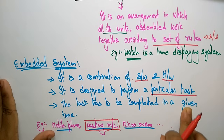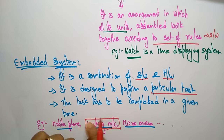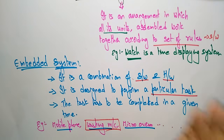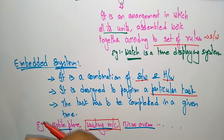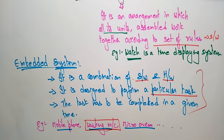The embedded system is designed to perform only a particular task. A washing machine performs only one task — washing clothes — and that task requires hardware components like the drain mechanism assembled together, working according to a set of rules, which is the software. That task has to be completed in a given time: whether draining, rinsing, or washing, a time is set — one hour, 55 minutes, or 30 minutes for a quick drain. Similarly, a microwave oven consists of hardware components with software and performs only the particular task of cooking within a given time.